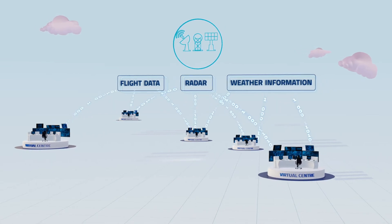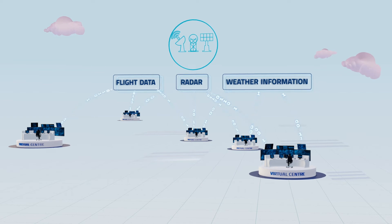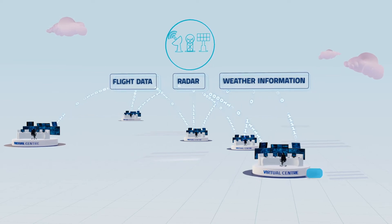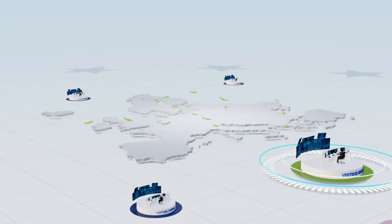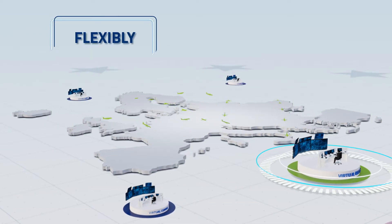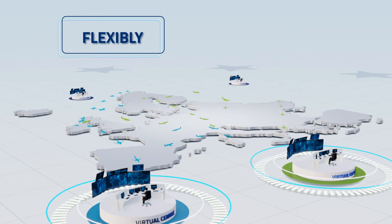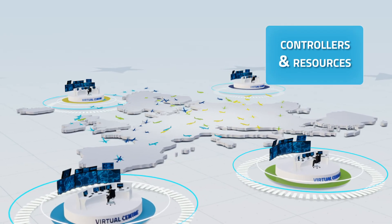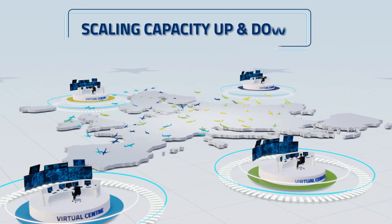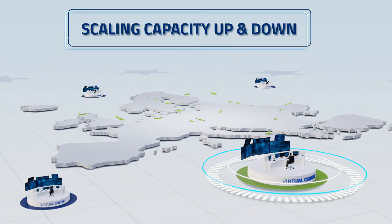In doing so, air navigation service providers can lower their costs by pooling services and resources. Sharing also means being able to deal more flexibly with traffic fluctuations, virtually allocating controllers and resources where and when needed, and scaling capacity up or down according to demand.